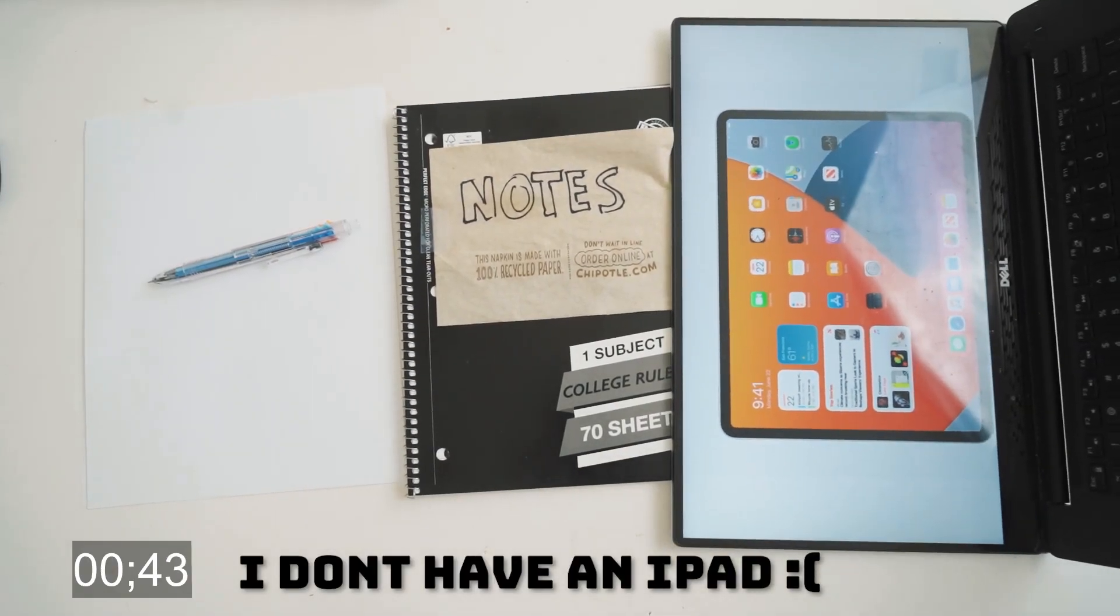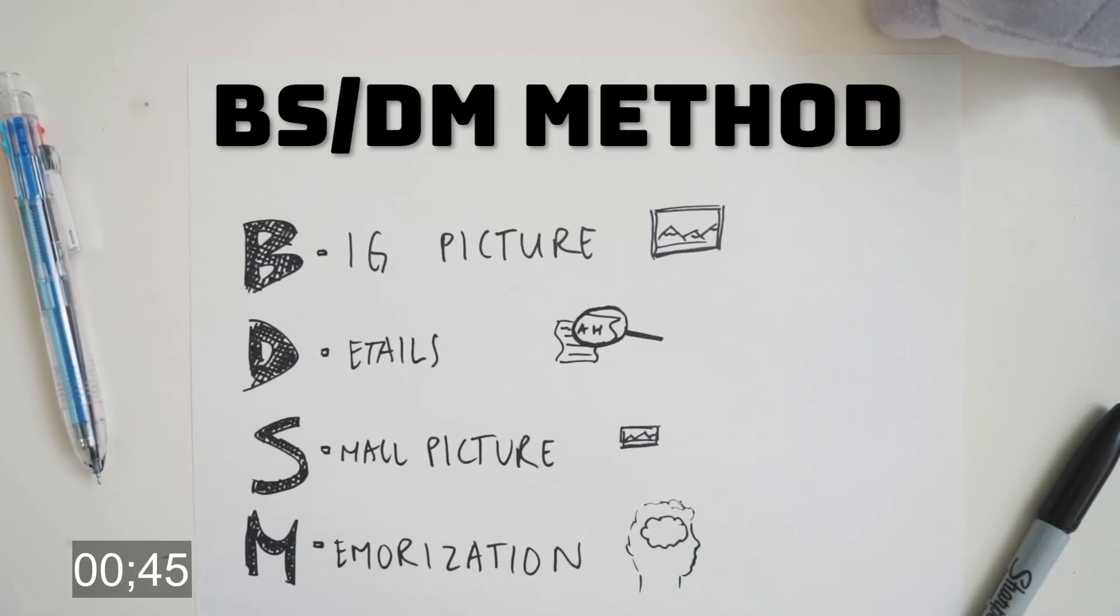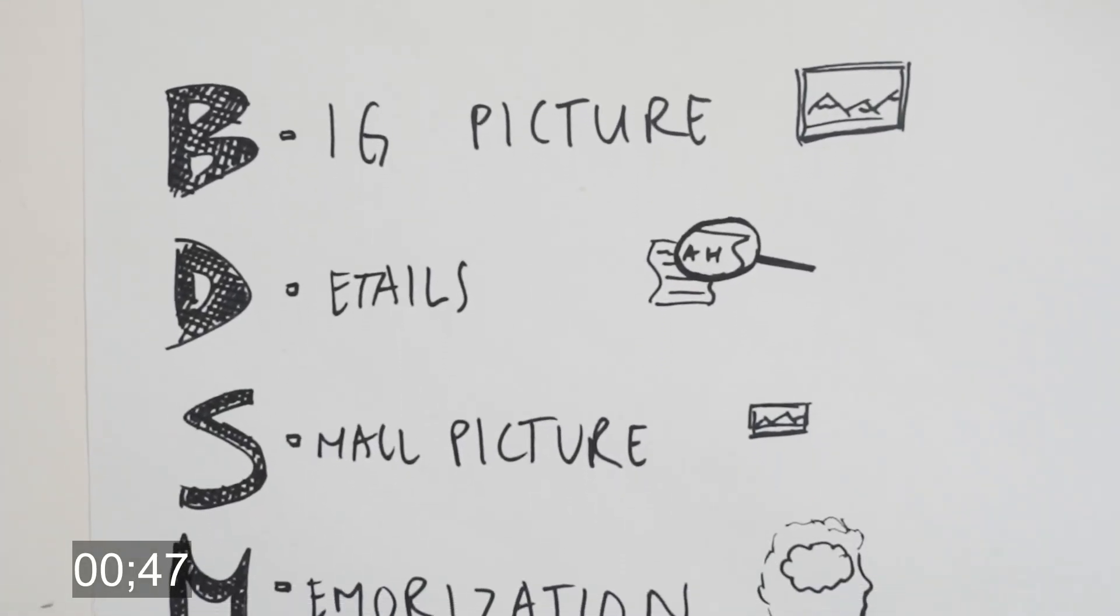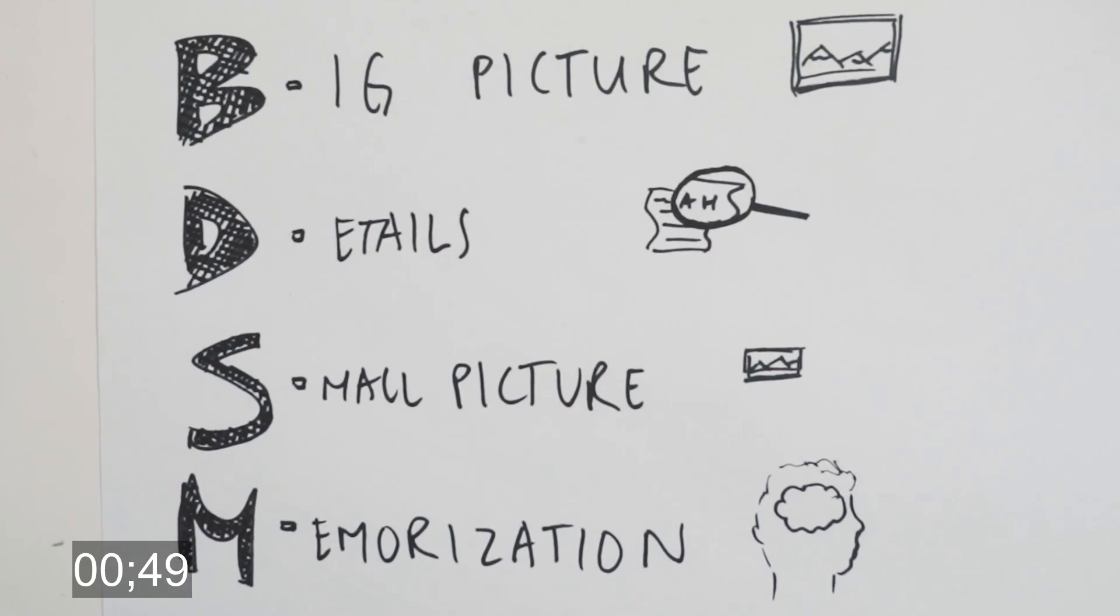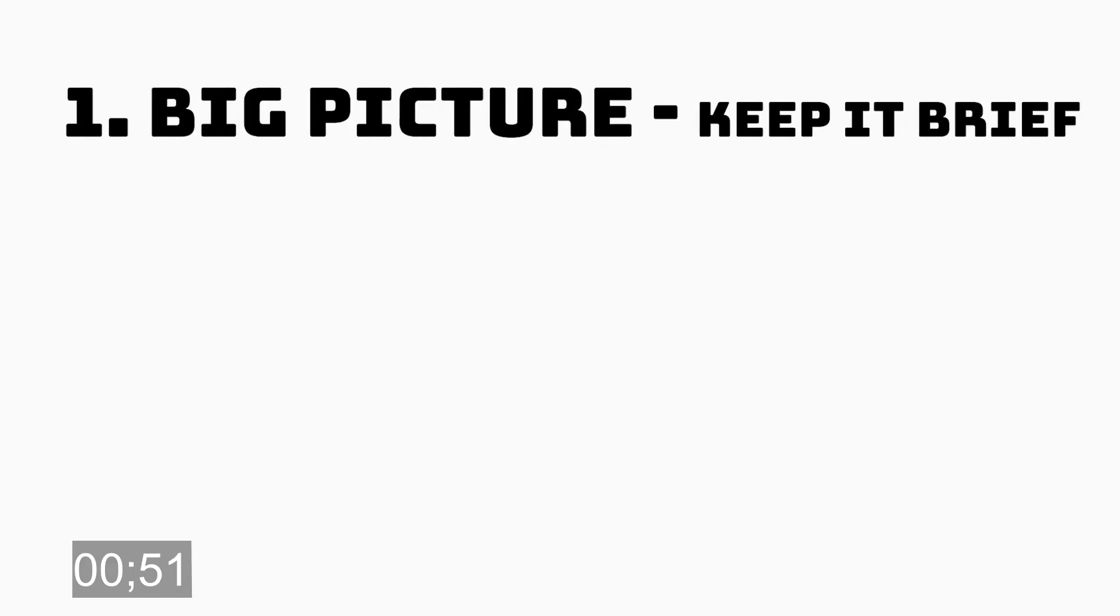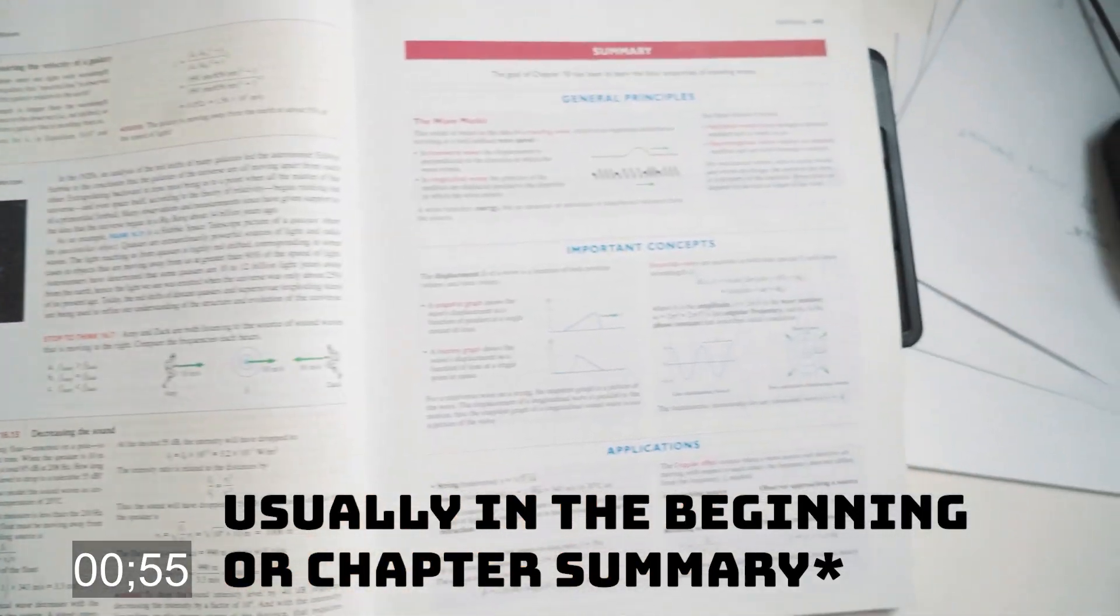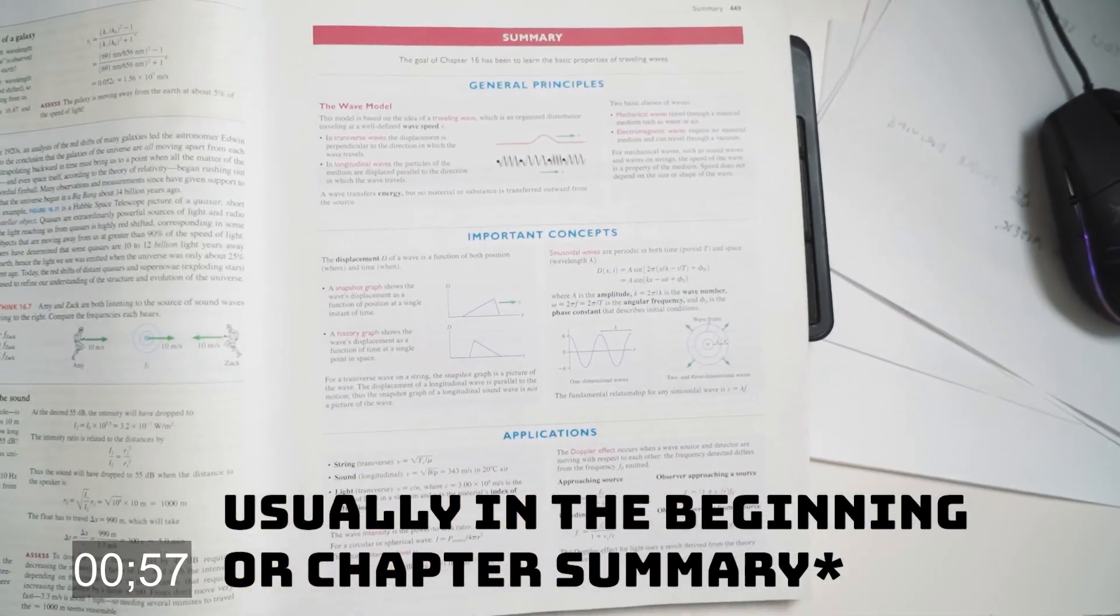The BDSM method stands for Big Picture, Details, Small Picture, and Memorization. First, before you start taking notes, try to find the big picture summaries or figures of what you're learning and copy them down on a blank sheet.